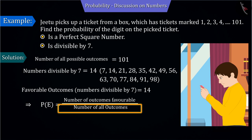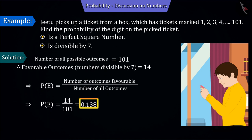Substituting the values of the total possible outcome and the outcome favorable to the event in the probability formula and solving, the probability of getting the number divisible by 7 is 0.138.